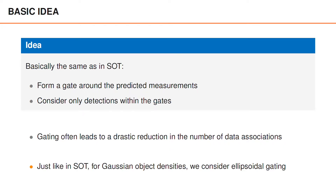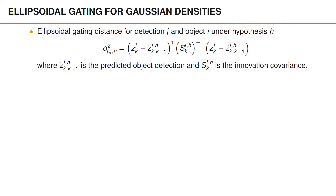Just like in single object tracking, if the object densities are Gaussian, we consider ellipsoidal gating. There are multiple different ways to do the gating; however, given that Gaussian object densities are common in object tracking, we're going to focus on ellipsoidal gating. The ellipsoidal gating distance for detection J and object I, under hypothesis H, is denoted D and is defined as the residual transposed times the inverse innovation covariance times the residual. The residual, sometimes also called the innovation, is the difference between detection J and the predicted detection Z-hat for object I.